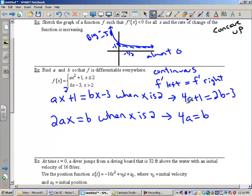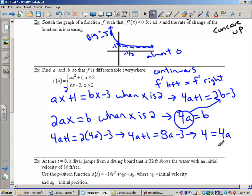Now I have enough information that I can find a and b. So I'm going to substitute. This is already solved for b equals 4a. So I'm going to take this 4a and substitute it right there for b. So my equation will be 4a plus 1 equals 2 times 4a minus 3. So 4a plus 1 equals 8a minus 3. So add the 3 to both sides. Subtract the 4a from both sides. So 4 equals 4a. Therefore, a equals 1. And if a equals 1, b has to be 4.